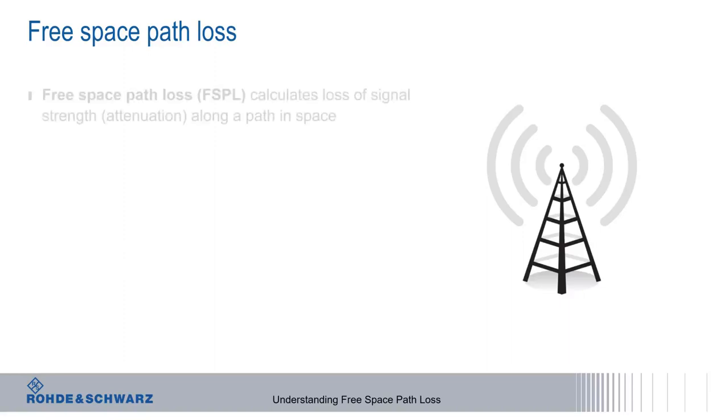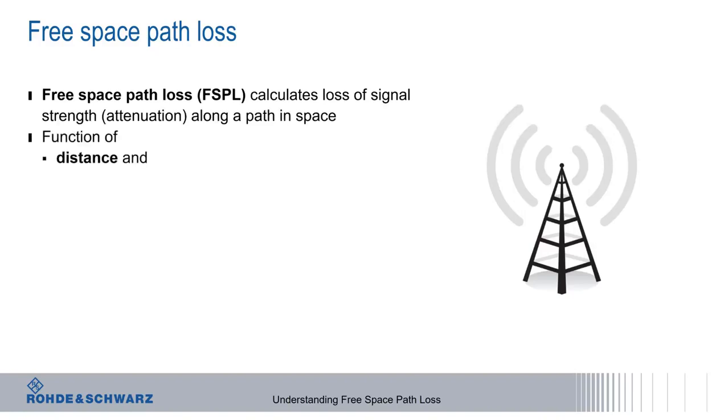As the name implies, free space path loss refers to the loss of signal strength, or the attenuation of a signal, as it travels through a path in space. As we'll see in this presentation, this loss is a function of two variables: the distance the signal travels, as well as the frequency of the signal.